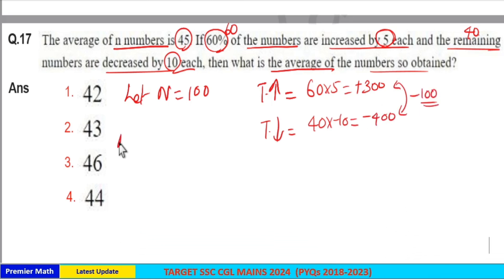Now new average is equal to initial average 45 plus overall change of minus 100. So this minus 100 should be equally distributed to the total number 100. This will become 45 minus 1 is 44. So new average is 44, option 4 is your answer.